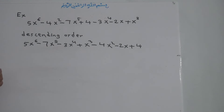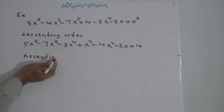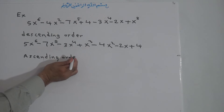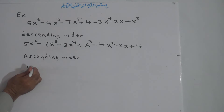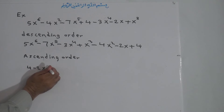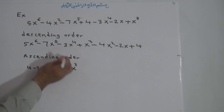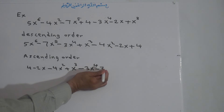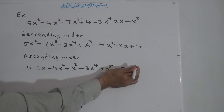If we arrange it in ascending order — that is, increasing order — we start from smallest to largest: 4, minus 2x, minus 4x squared, plus x to the power of 3, minus 3x to the power of 4, minus 7x to the power of 5, and plus 5x to the power of 6.